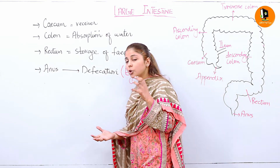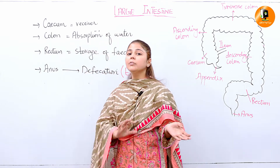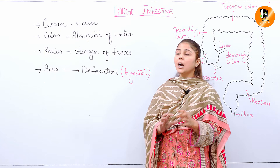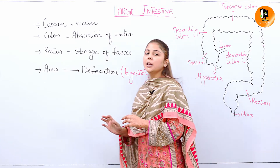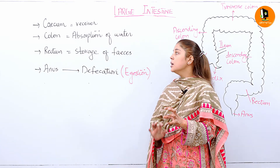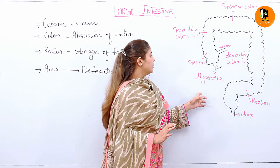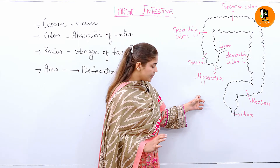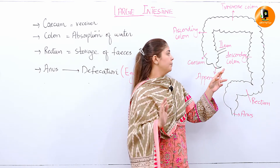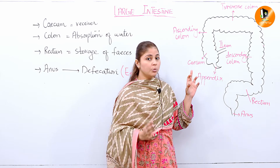That solid waste is called feces or stool. Ab kya hota hai — jab colon ke andar completely absorption ho gayi, hardened stool ban gayi hai, that will directly pass into the rectum. Rectum ka koi khaas kaam nahi hai — just to store that feces. You can see in this diagram ke colon ki bohut zyada elongated jagah hai, jahan absorption hoti rehti hai.